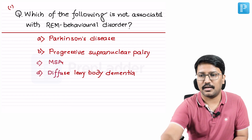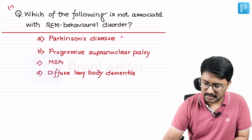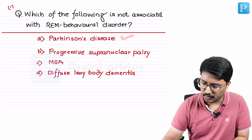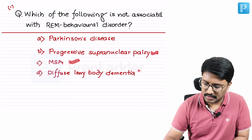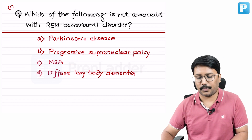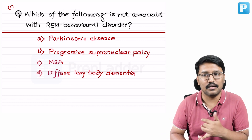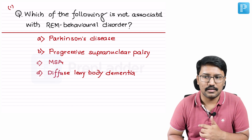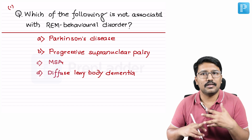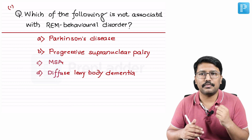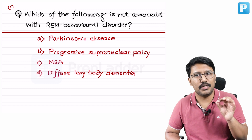Next question: which of the following is not associated with REM behavioral sleep disorder? Options are Parkinson's disease, progressive supranuclear palsy, multi-system atrophy, and diffuse Lewy body dementia. Two things to address: what is the REM behavioral disorder, and in which conditions it is seen.